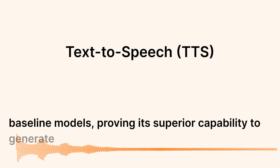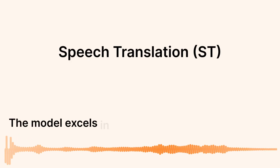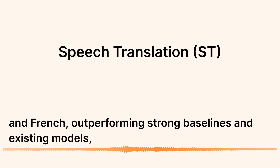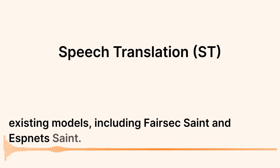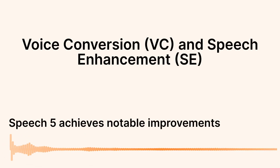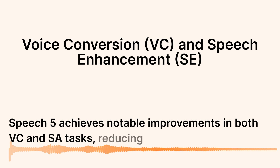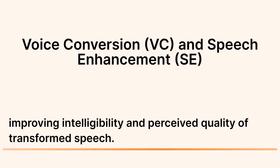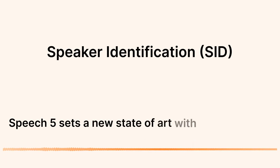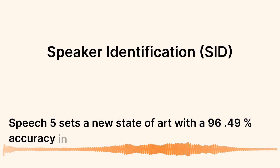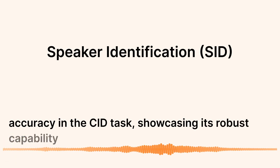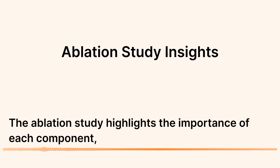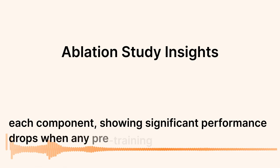The model excels in translating English to German and French, outperforming strong baselines and existing models, including Fairseq S2T and ESPnet S2T. SpeechT5 achieves notable improvements in both voice conversion and speech enhancement tasks, reducing distortions and improving intelligibility and perceived quality of transformed speech. SpeechT5 sets a new state of the art with 96.49% accuracy in the speaker identification task, showcasing its robust capability in speaker classification.